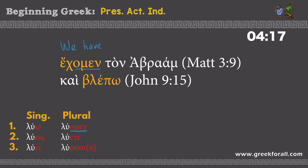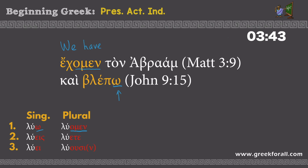So we translate 'we have Abraham' — that is the translation of this text. The second text is 'kai blepo.' We look at the ending omega and find it in the first person singular. In fact, the first person singular is your lexical form — this is what you will see in lexicons and dictionaries and vocabulary books; this is how you learn verbs. So 'blepo' is your lexical form, which means 'I see.' So we translate this as 'and I see.' Very simple — look at the endings, see where it is, and translate accordingly.